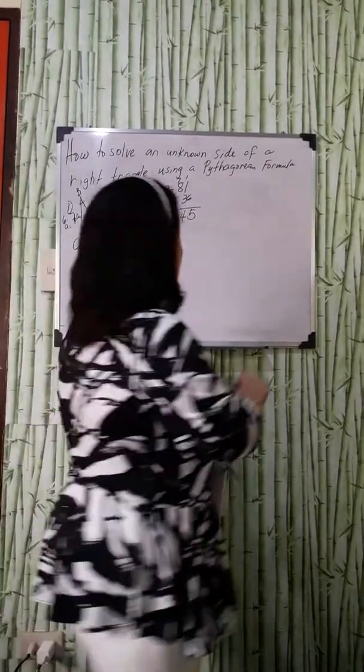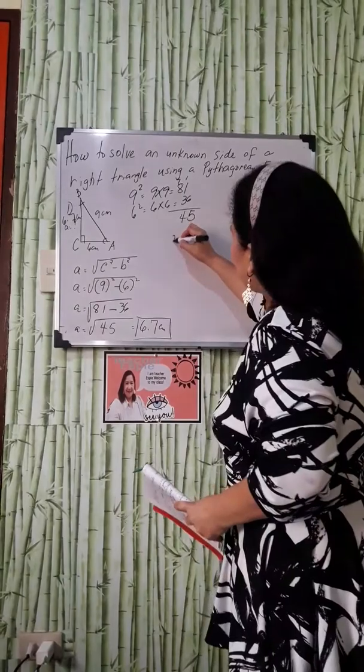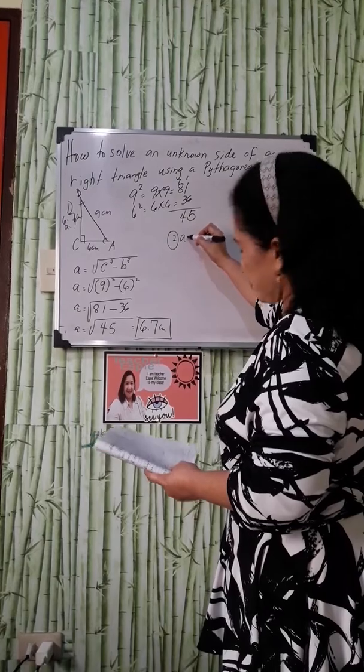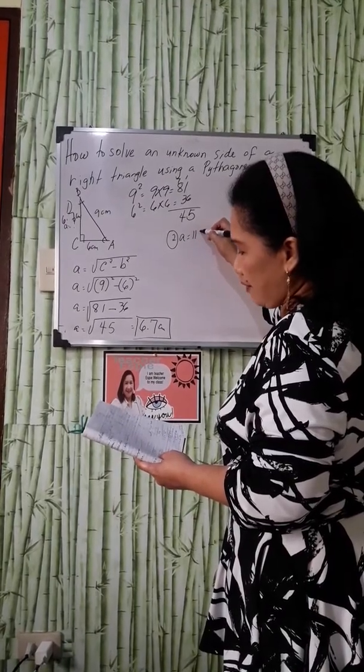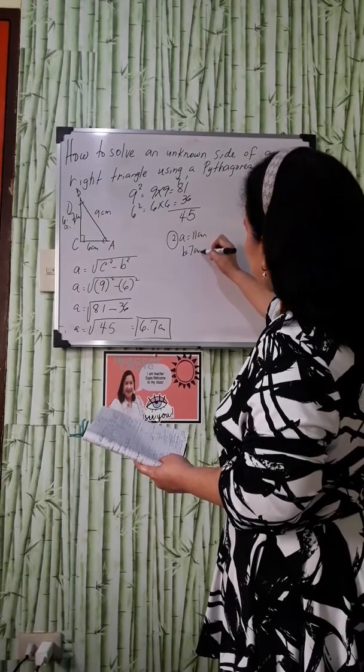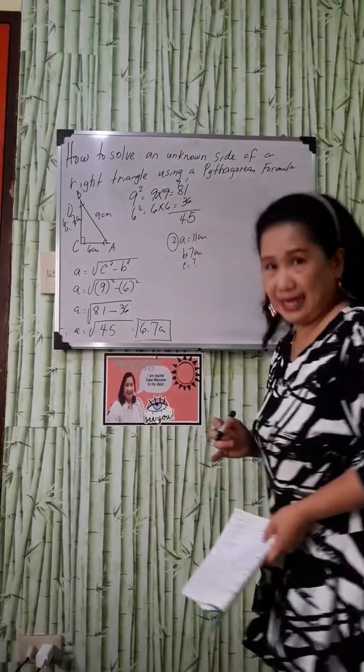Let us go now to our example number 2. If I'm going to give you, A is equal to 11 cm, B is equal to 7 cm, you are going to find side C.